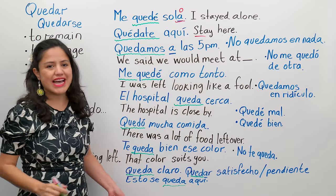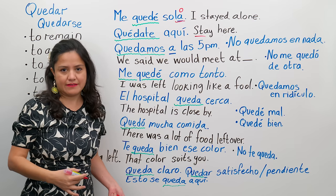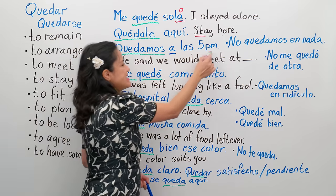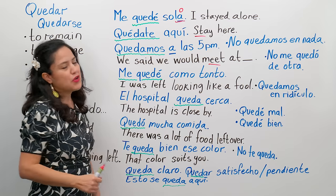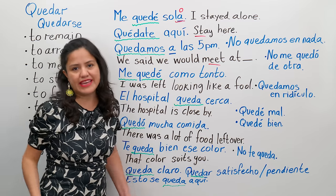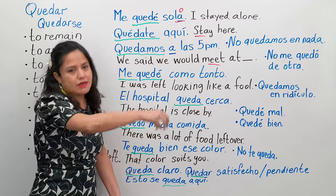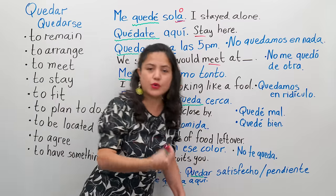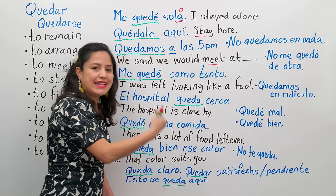Quedamos a las cinco. We said we would meet at five — after we talked, we said we would meet at five. Quedamos a las cinco de la tarde. Sometimes you can also say quedamos en — and the place where you're going to see that person. For example, in Mexico: quedamos en el VIPs o el TOX — those are restaurants that are everywhere, siempre hay uno cerca. Quedamos en el VIPs. Quedamos a las cinco — we said we would meet at five, we said we would meet at the VIPs.